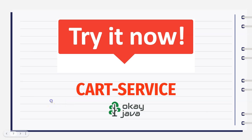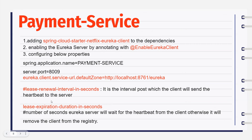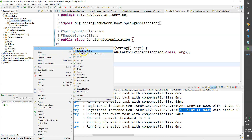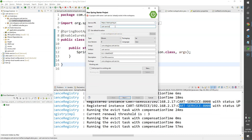Next, we are going to build another microservice called Payment Service. We'll do the same thing: add spring-cloud-starter-netflix-eureka-client dependency, use the @EnableEurekaClient annotation, and add properties for application name, port number, and service URL pointing to the Eureka Server.